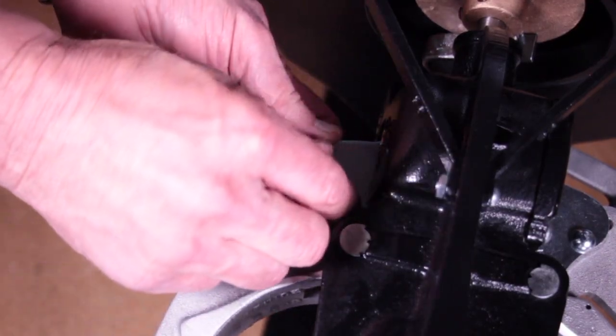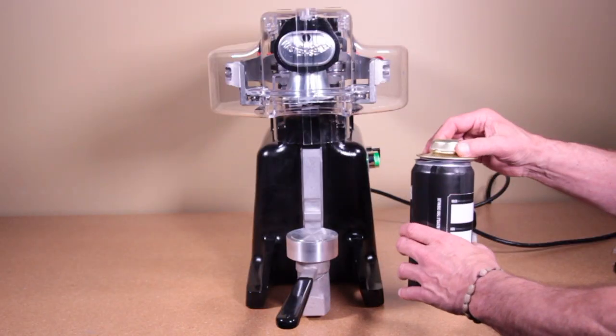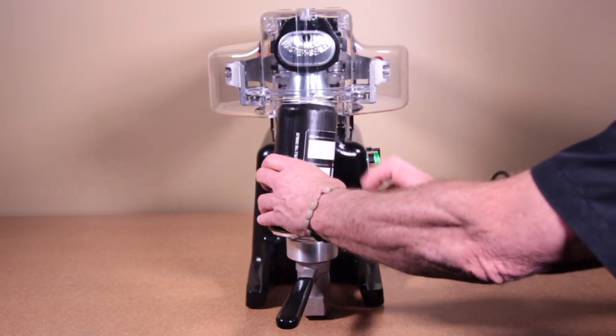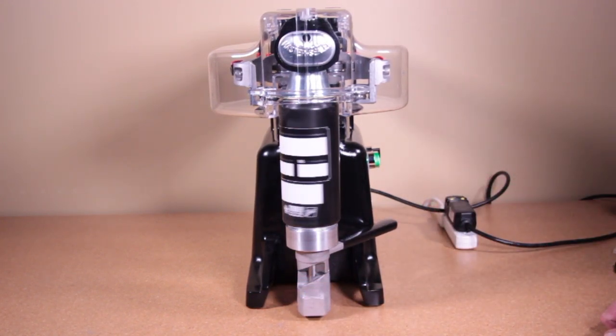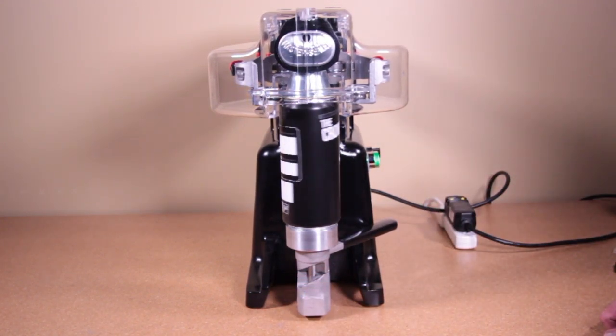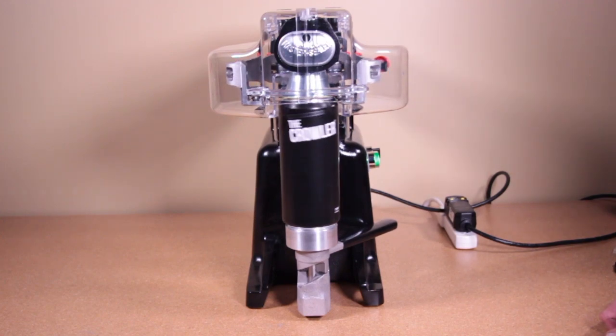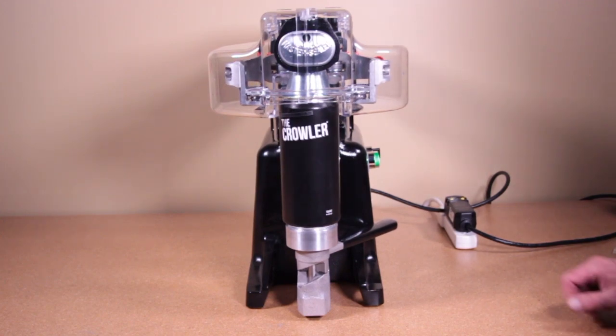Once your second seam is in spec, go ahead and replace the first seaming arm pins and then cycle the machine once more with a new can. Your seam should now be in spec.